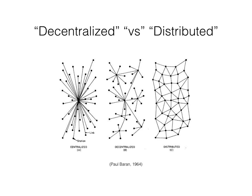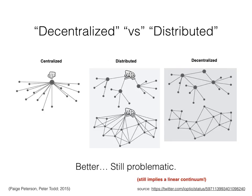These are just words that refer to different aspects of a system. So Paige Peterson and Peter Todd tried to improve upon it earlier this year, and they created this graphic. You can see in the two columns on the right, the decentralized and distributed networks of Paul's are actually in both pictures. The only difference between the two columns is that in one there is a hand indicating the system belongs to a single party, and in the other the hand isn't there. This is better, but it's still a little problematic in that it places the words along a spectrum, which can still mislead people into thinking one side is bad and the other is good.